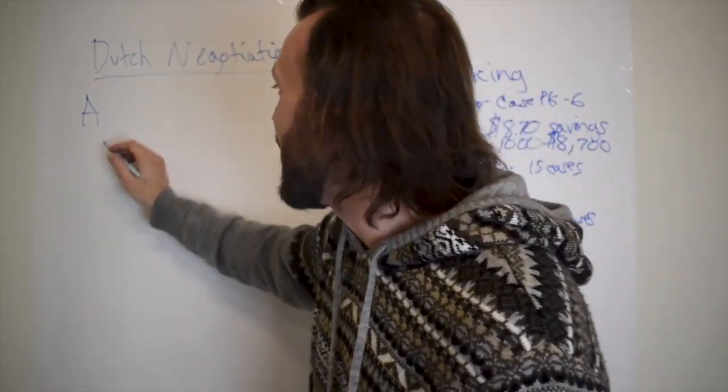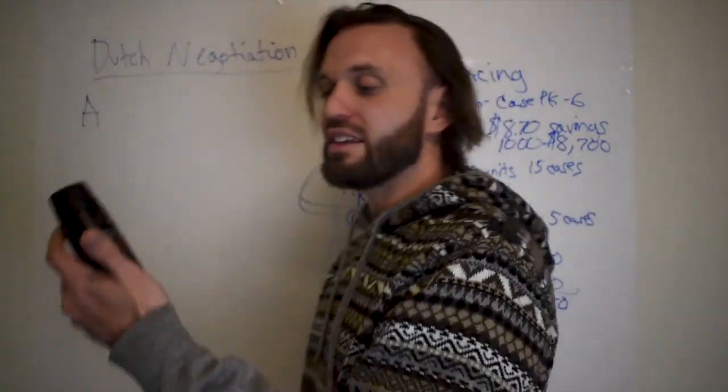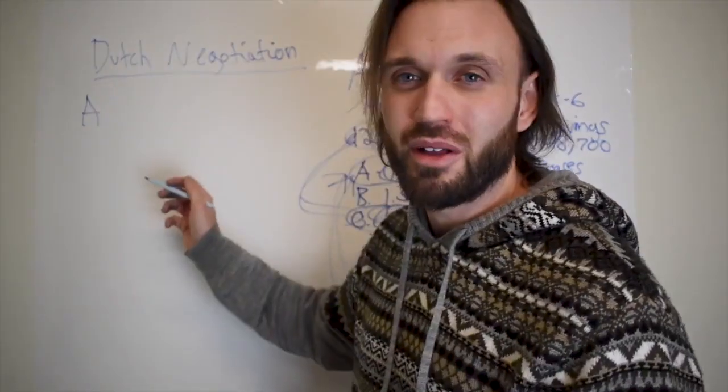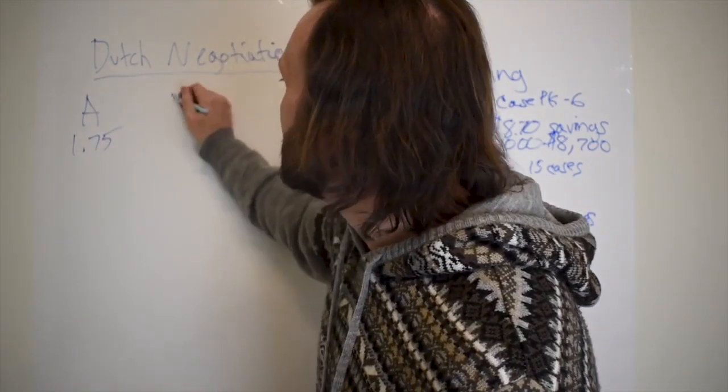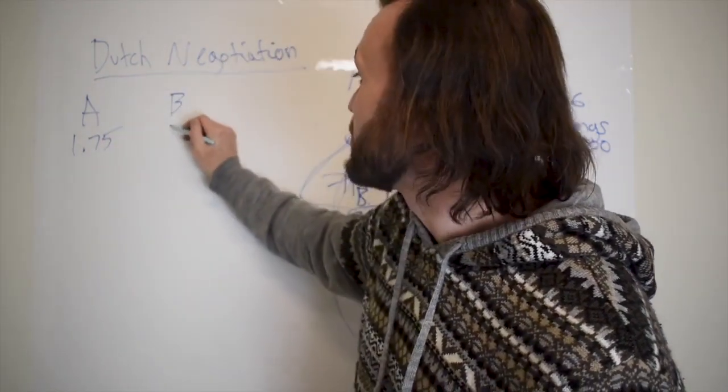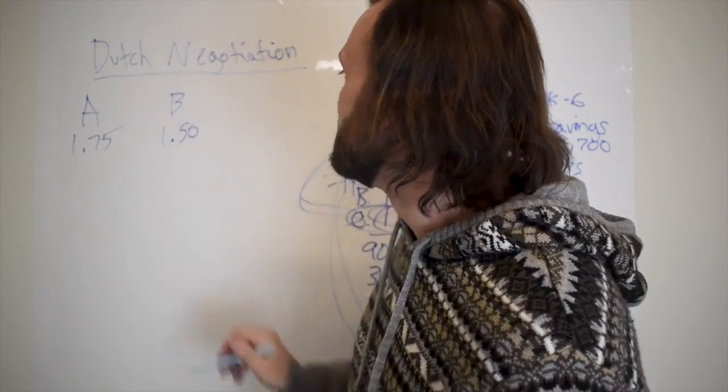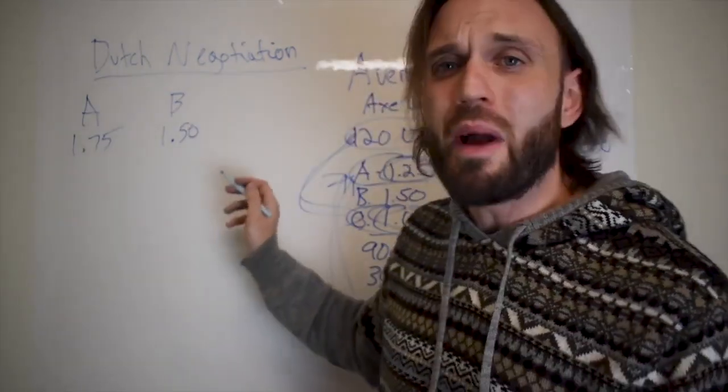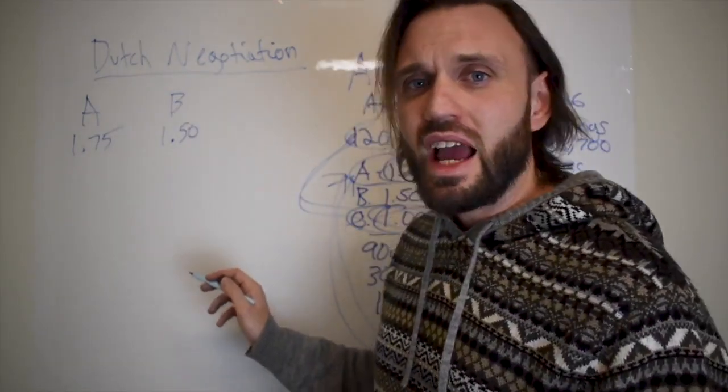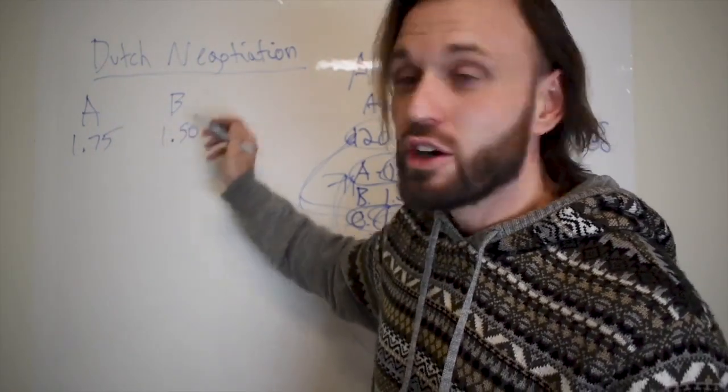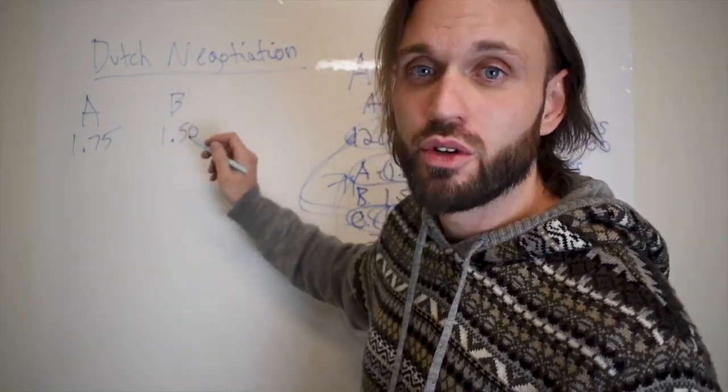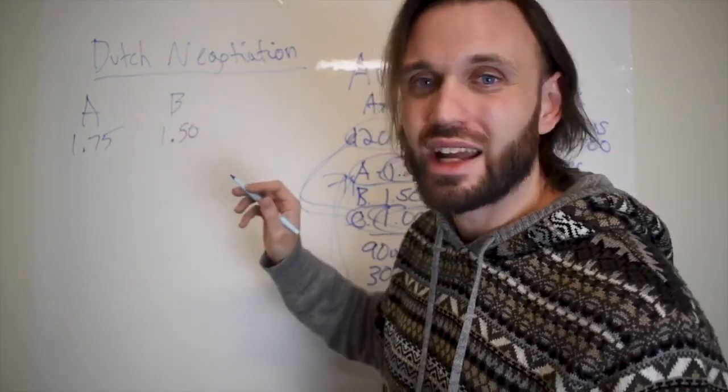So let's say distributor A has the same product, this Axe Dark Temptation, they're going to be a little more expensive. We're going to say they have it for $1.75 and distributor B has this product for $1.50. So you're going to go back and forth with these companies and you're going to say, hey distributor B, I need this product for $1.42. Let's say that's the price you're trying to get to.